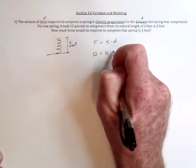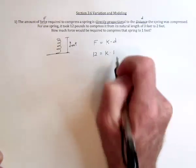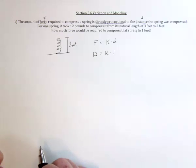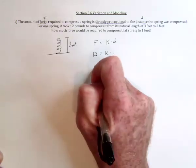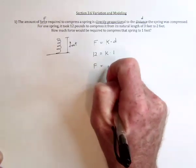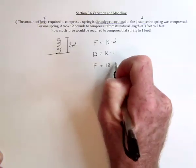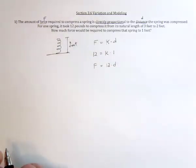So the distance that it was compressed is one. And so that tells us that k equals 12. So from now on for this particular spring, we can always use force equals 12 times the distance.